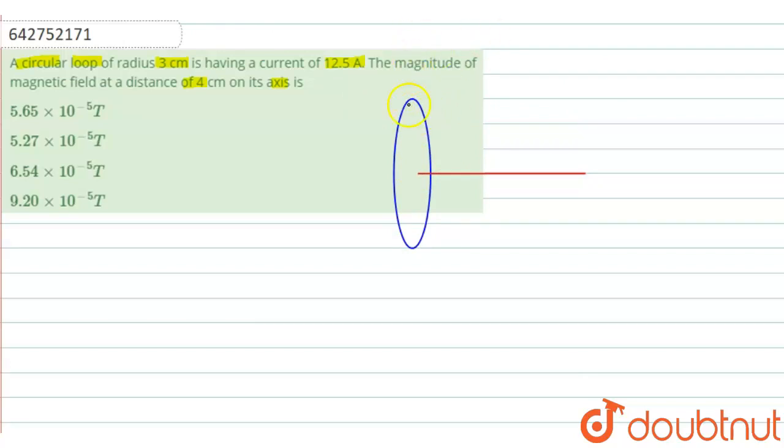And the distance, that means the radius is given, this is equal to r, and the distance from the center to the axis. The axis point is x and now we have to find the value of magnetic field at this point.